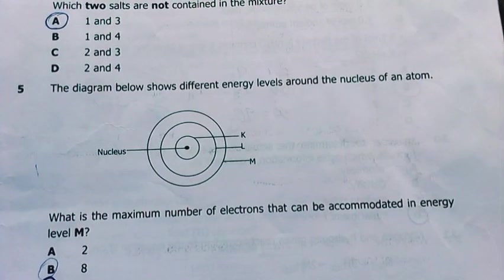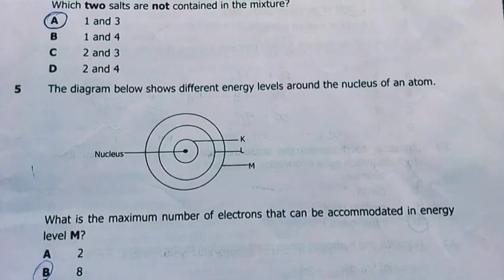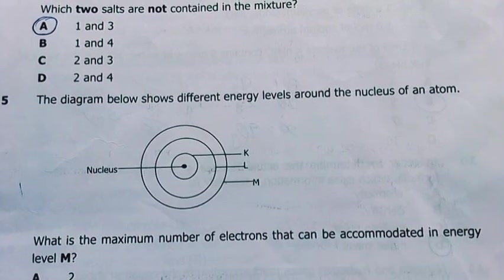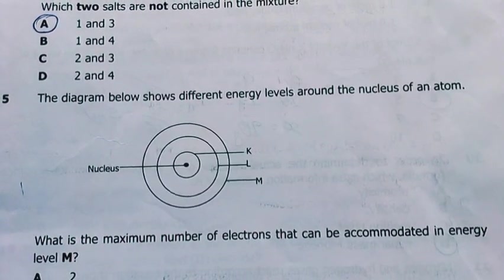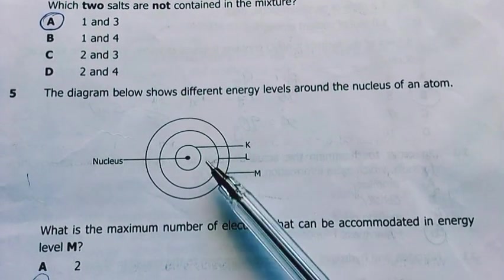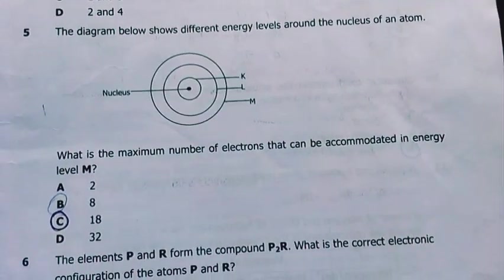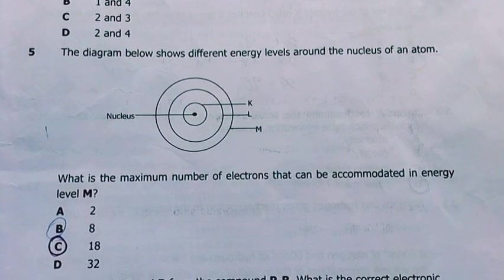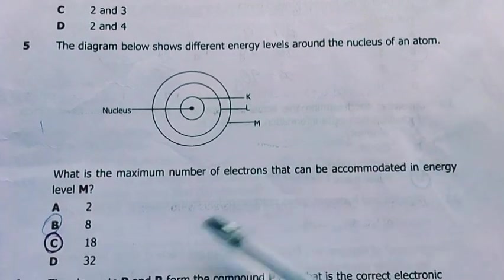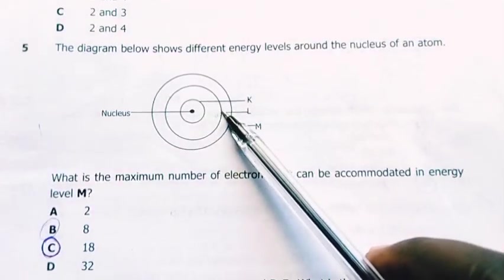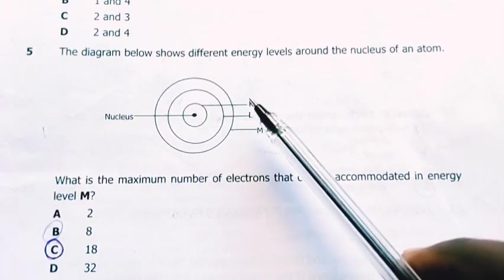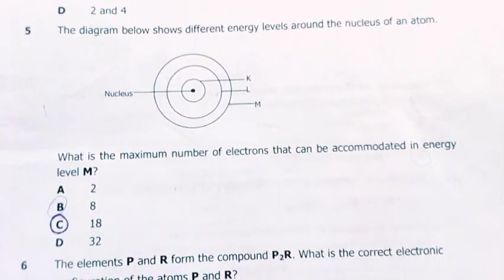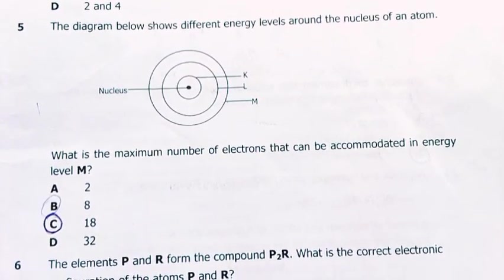Number five. The diagram below shows different energy levels around the nucleus of an atom: K, L, M, N, it goes on up to J. What is the maximum number of electrons that can be accommodated in the energy level M? My answer is 18: 2, 8, 18. Then the following one should be 32. The answer there is C.